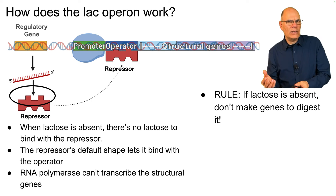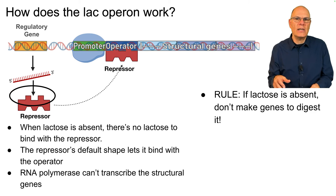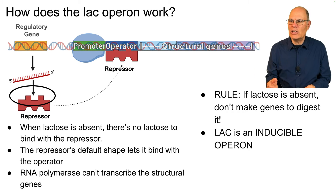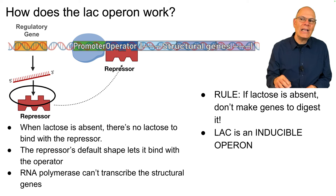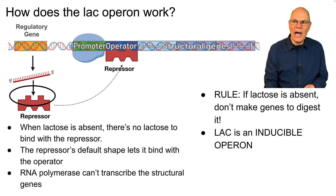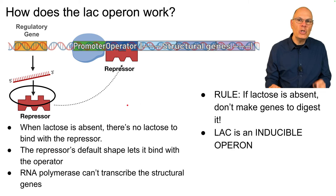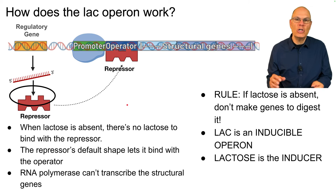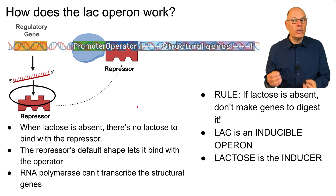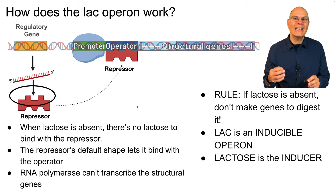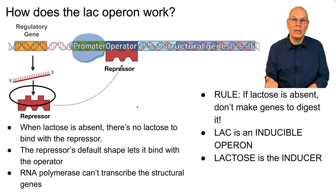When lactose is absent, there's no lactose available to bind with the repressor. The repressor's default shape lets it bind with the operator, so RNA polymerase can't transcribe the structural genes. The rule is: if lactose is absent, don't make enzymes to digest it. Think of this as a metabolic adaptation — it saves energy. Don't make enzymes to digest something when it isn't around. Lac is therefore an inducible operon. It can be induced to be turned on. What turns it on? Lactose — lactose is the inducer.